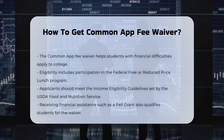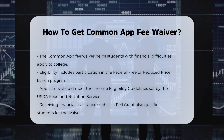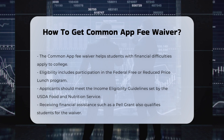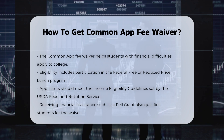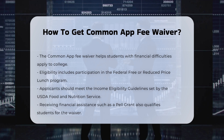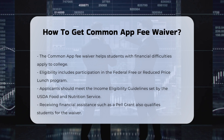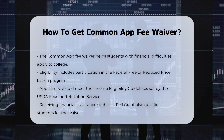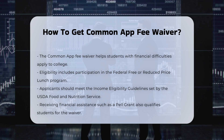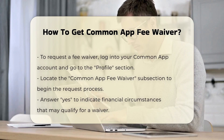Eligibility Criteria. To qualify for a Common App Fee Waiver, you must meet specific indicators of economic need. These include being enrolled in or eligible for the federal free or reduced-price lunch program, having a family income that meets the income eligibility guidelines set by the USDA Food and Nutrition Service, or receiving other forms of financial assistance, such as a Pell Grant.